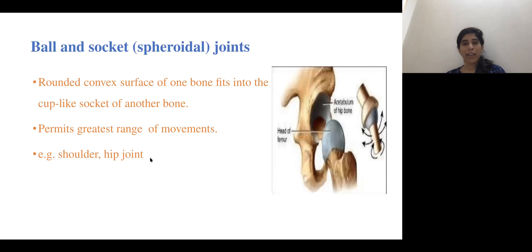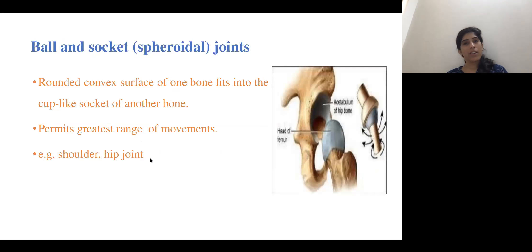The ball and socket joint — with the shoulder and hip joints as classic examples — has a rounded convex surface of one bone fitting into the cup-like socket of another bone. This type permits three-plane motion.